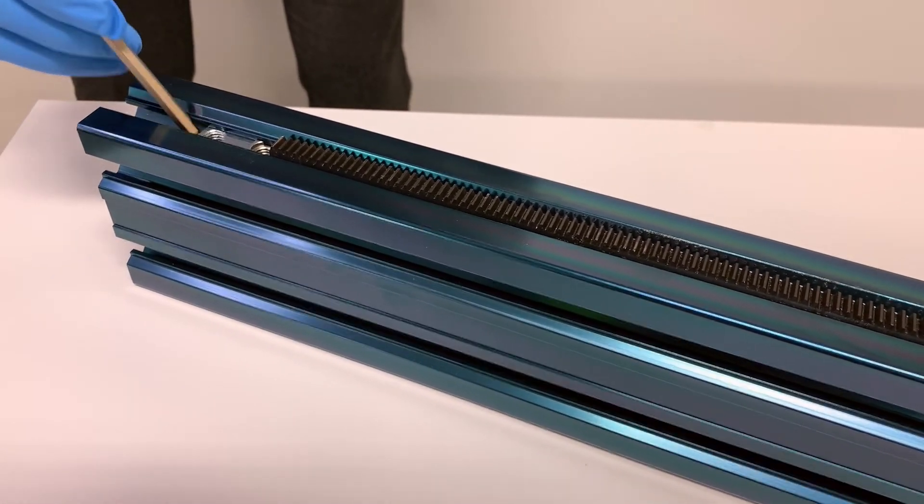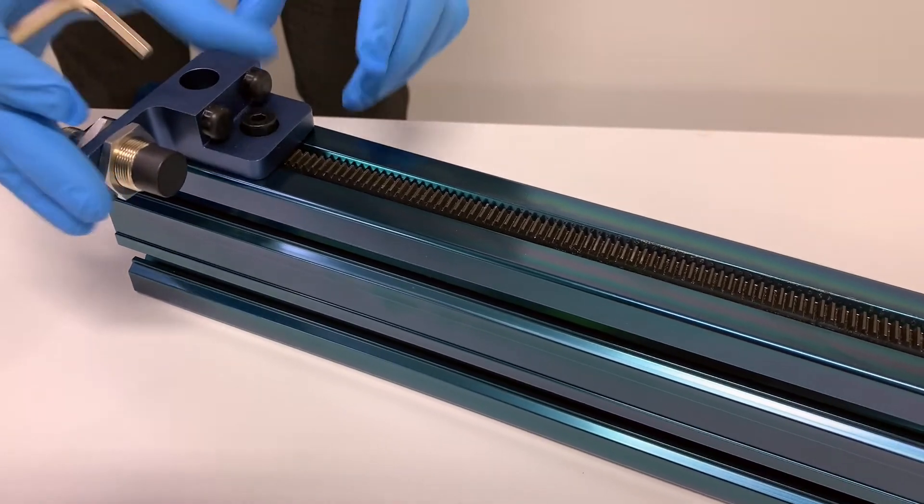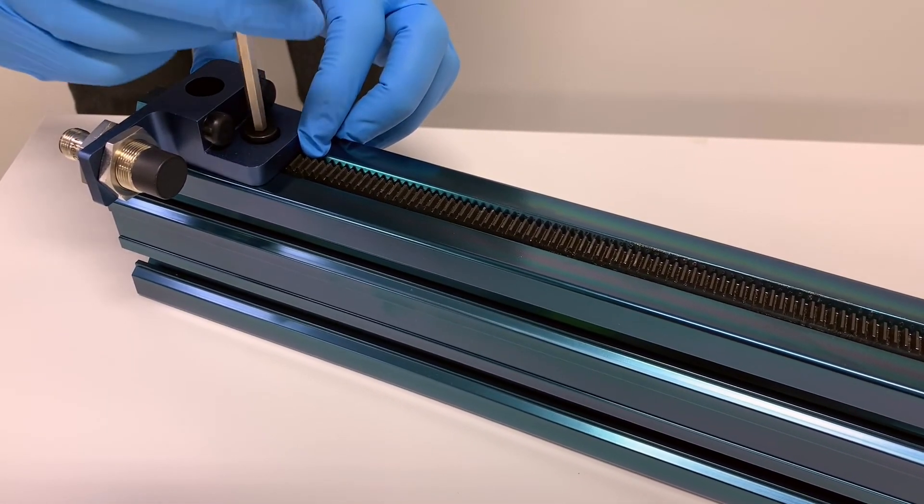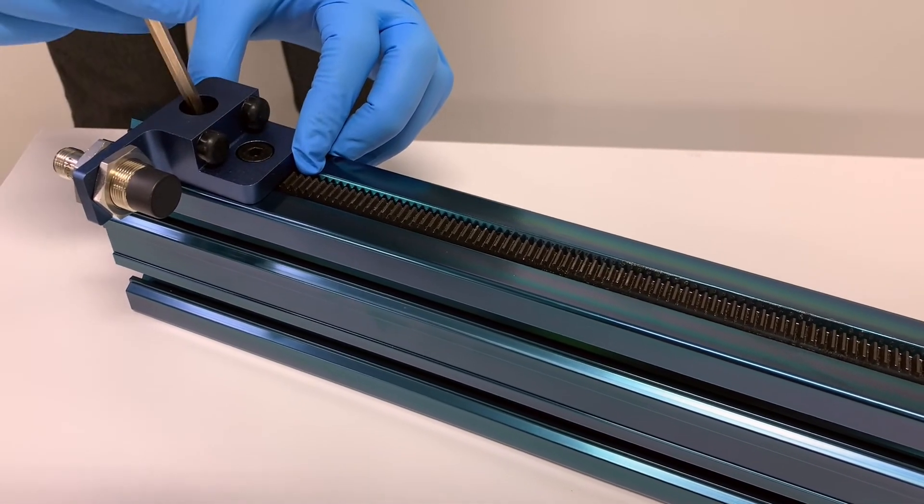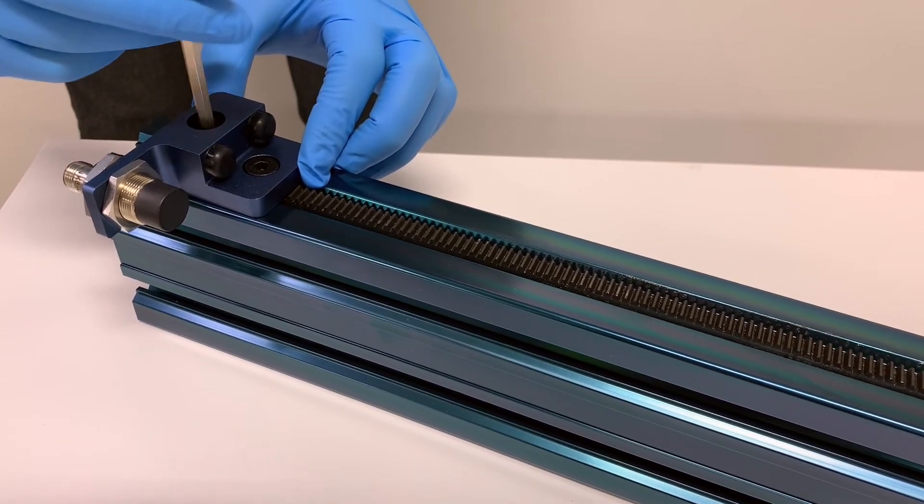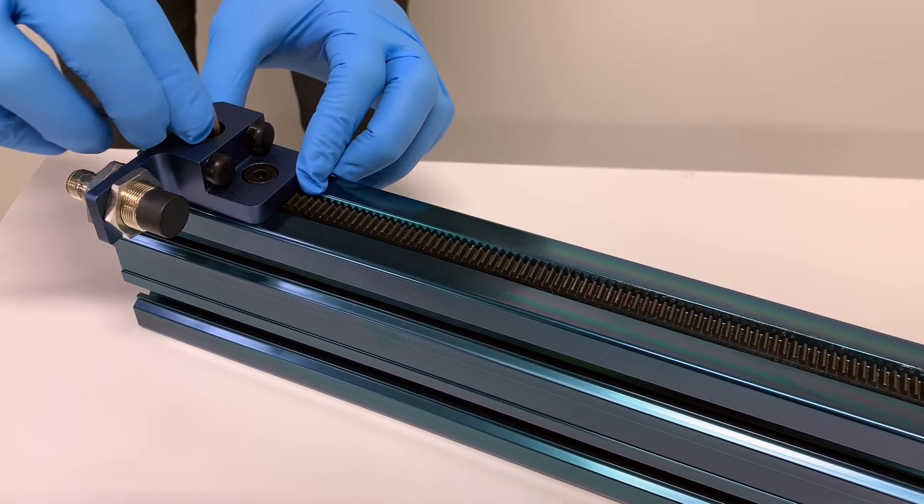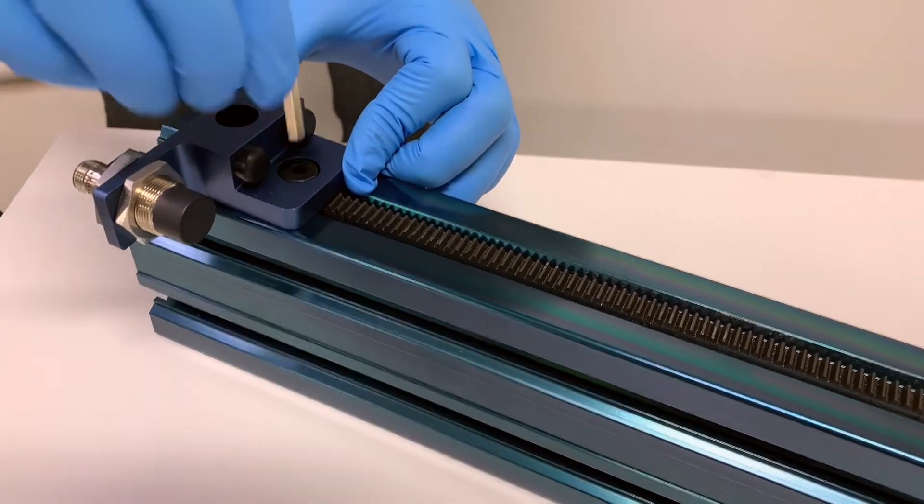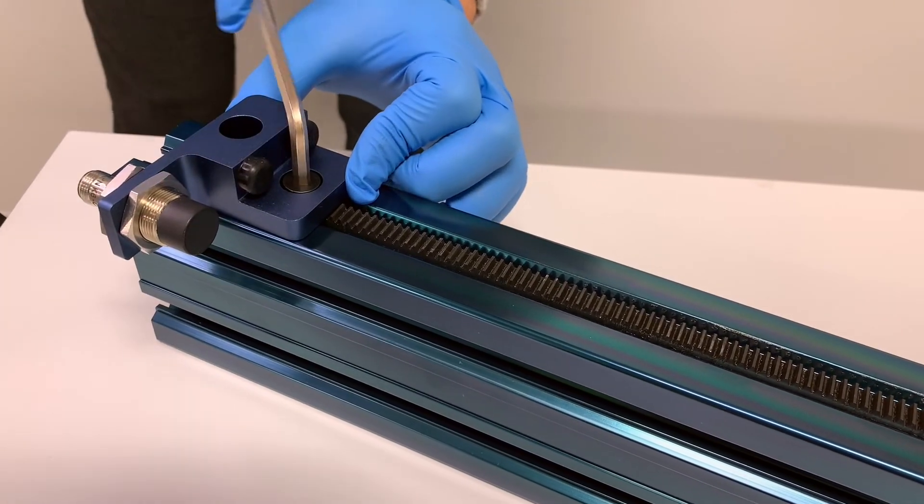To secure the opposite side of the rack, you would require a rack support T-nut, a regular T-nut, and two M8 16mm screws. Simply install the T-nuts as shown and tighten the screws, securing the rack with the end stop.